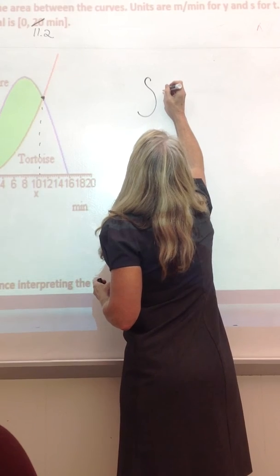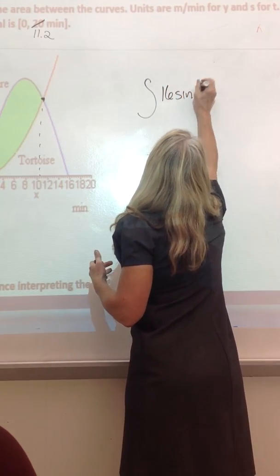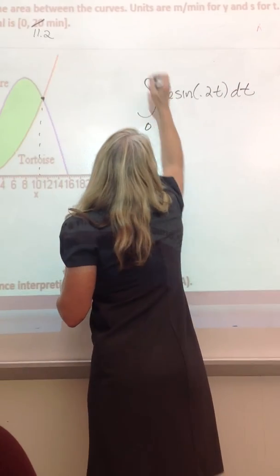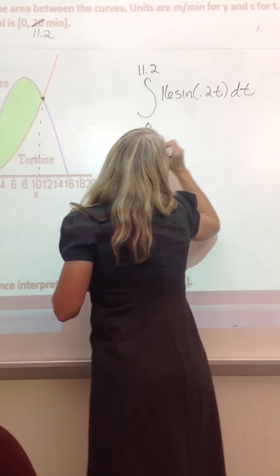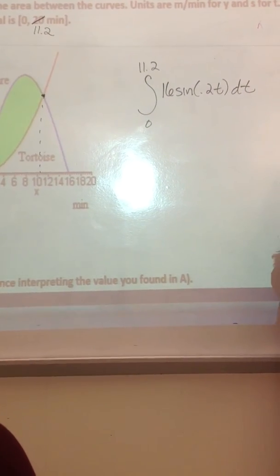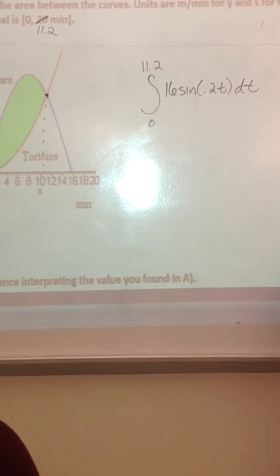So the hare is the one that's higher, so it's 16 sine of 0.2T, and we're going from 0 to 11.2, and then we're subtracting 0.1T squared, the area beneath that.